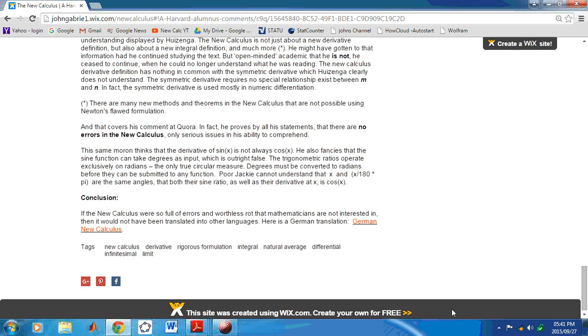Professor Jack Hasinger had a lot to say about new calculus. But the funniest thing is that he simply did not understand that the derivative of sin x is always cos x, regardless of what x is, whether x is stated in degrees or radians. The derivative is always cos x.